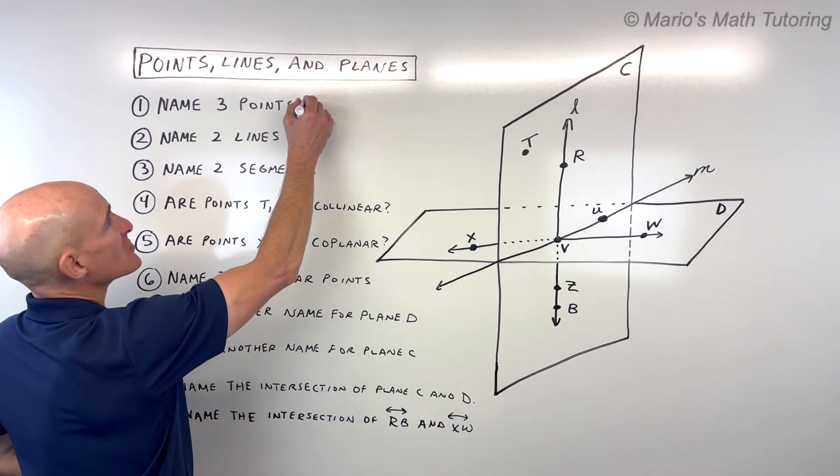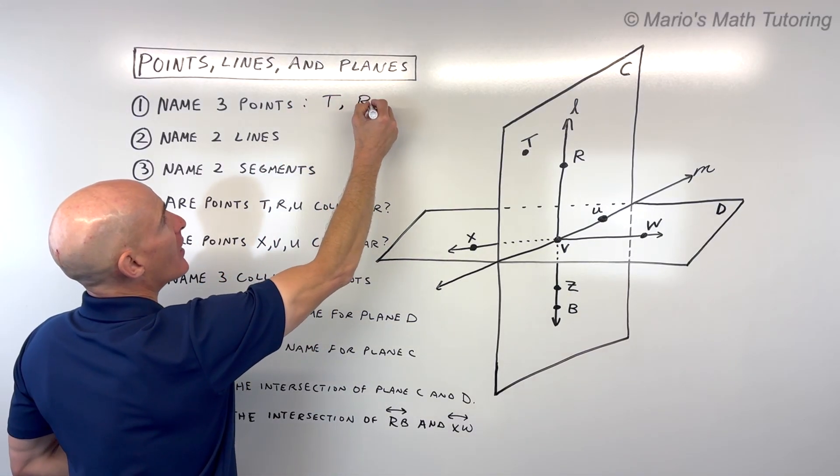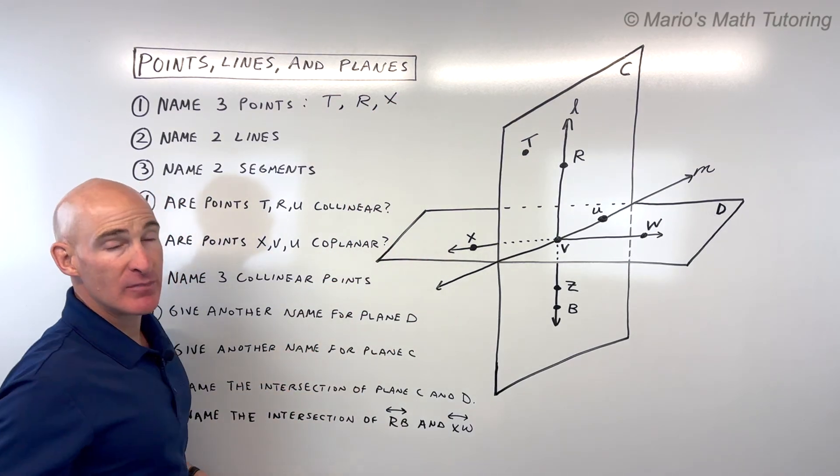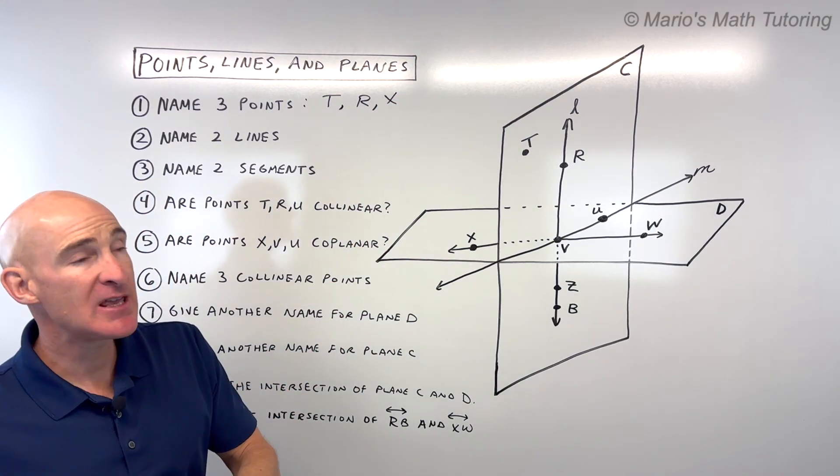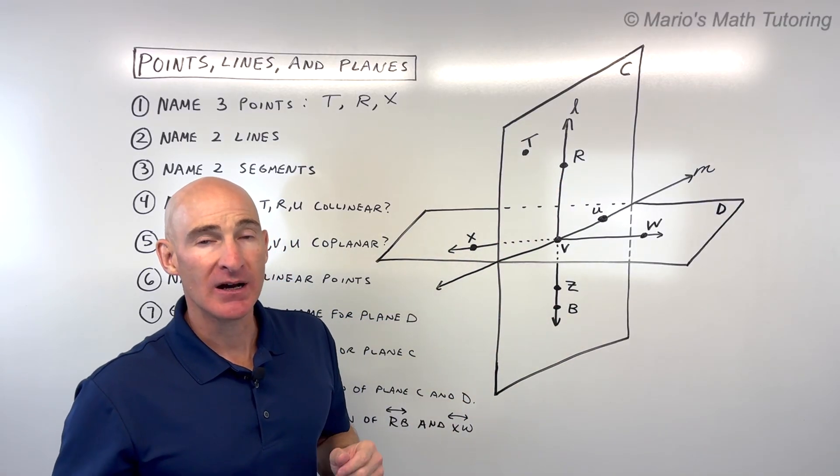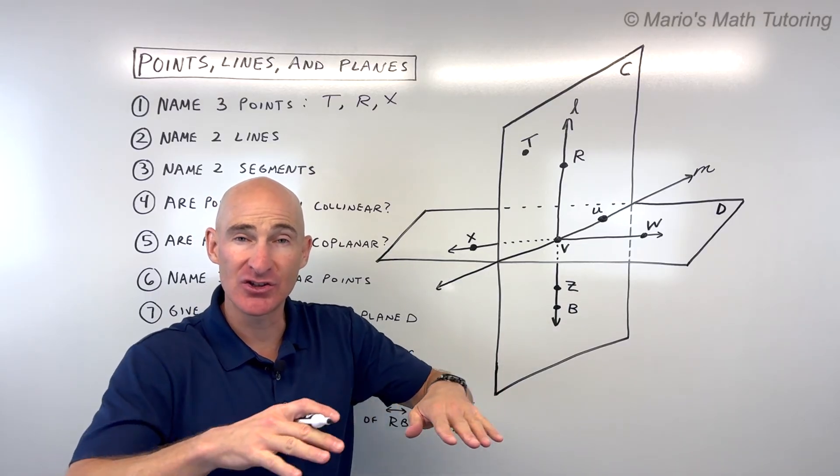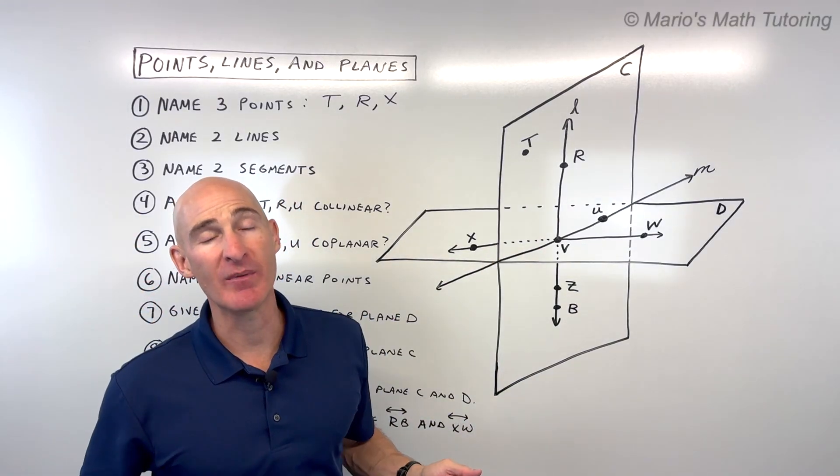There's a lot of correct answers here. I might say point T, point R, point X. Those would all be points in the plane. Another key about points is that they're zero-dimensional. A point is zero-dimensional, a line is one-dimensional, a plane is 2D or two-dimensional, and space is three-dimensional.